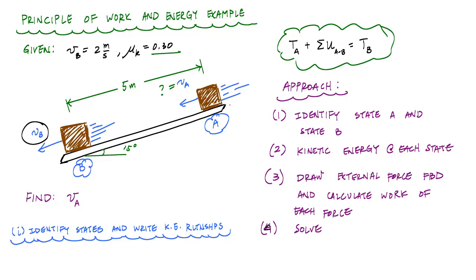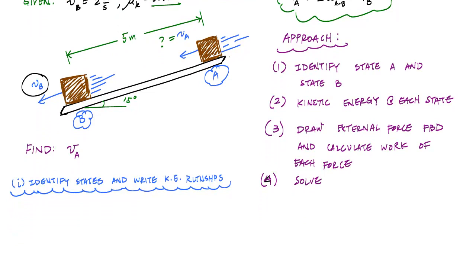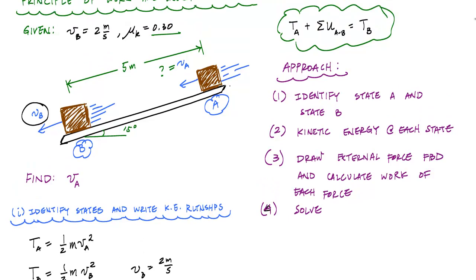At A, we don't know the velocity. In fact, we don't even know what the mass of the particle is. The kinetic energy at A is just ½mVA². The kinetic energy at B, TB, is ½mVB². But thankfully we know what VB is - VB is 2 meters per second. I'm just following this equation. I've defined my states A and B.